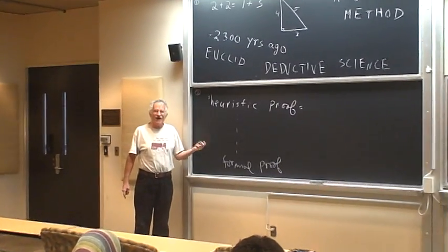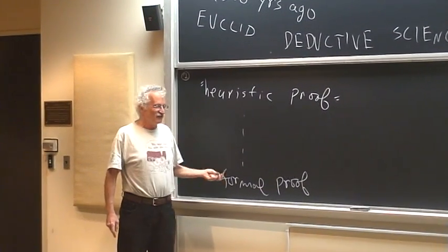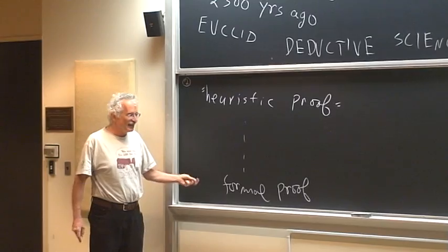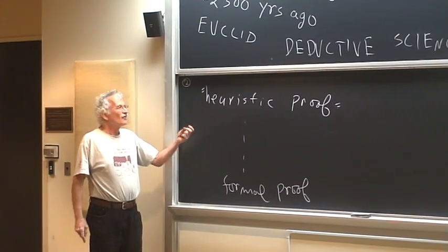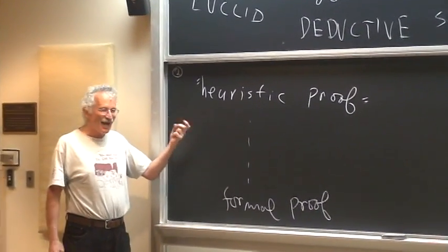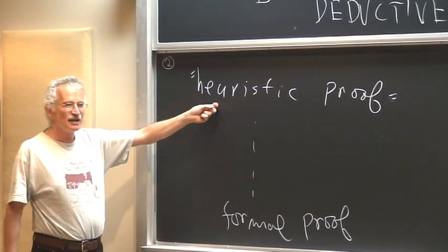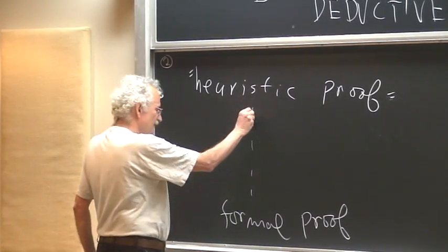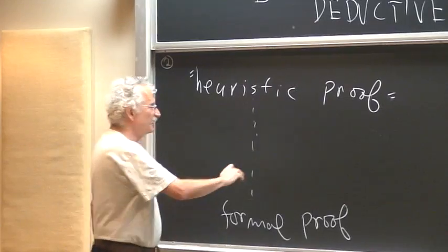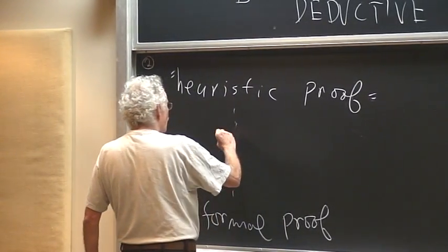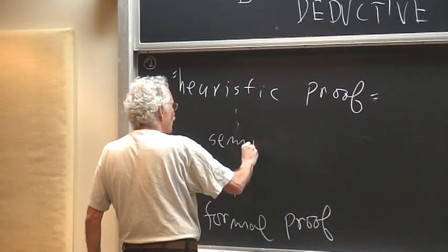We can only prove very, very little if you want completely rigorous proof. We have to be more flexible and take heuristic proof and do something that I coined about 15 years ago called semi-rigorous proof.